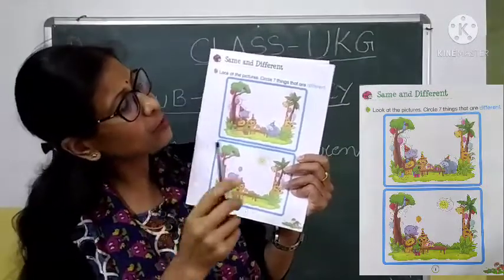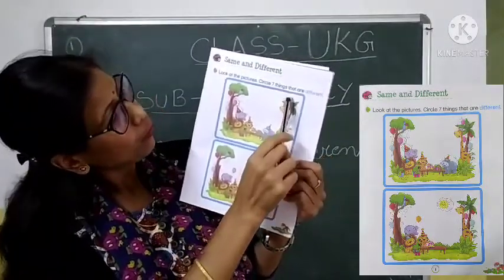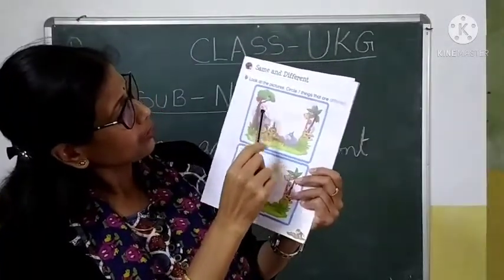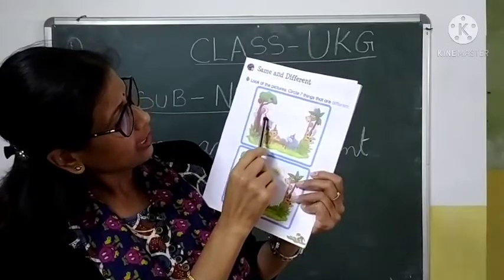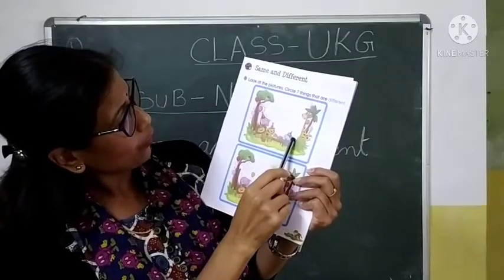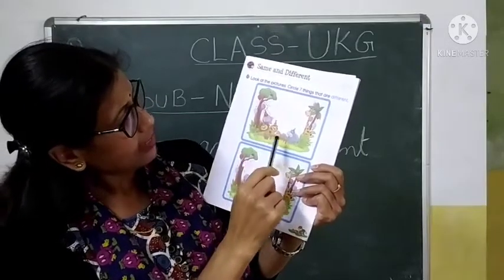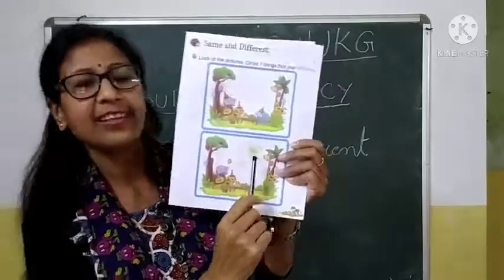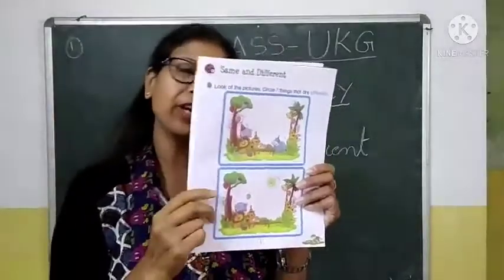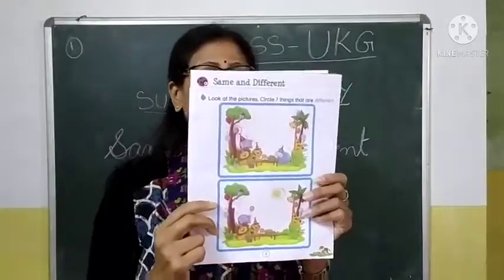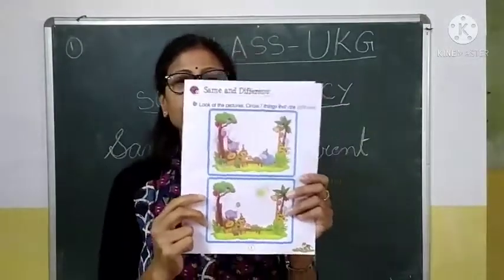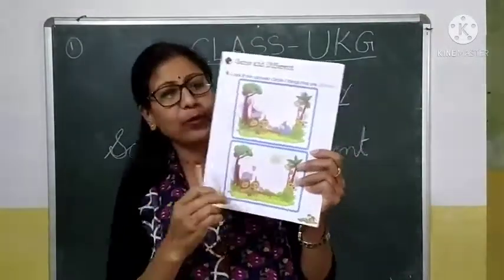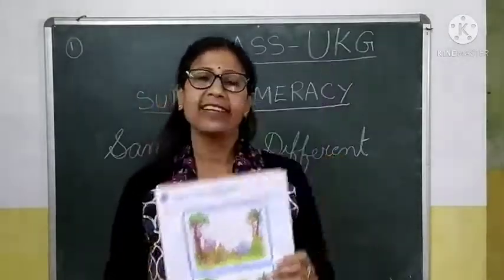Let us count once more. One, two, three, four, five, six, seven. So we got it. You take out your book and do this at home. Thank you.